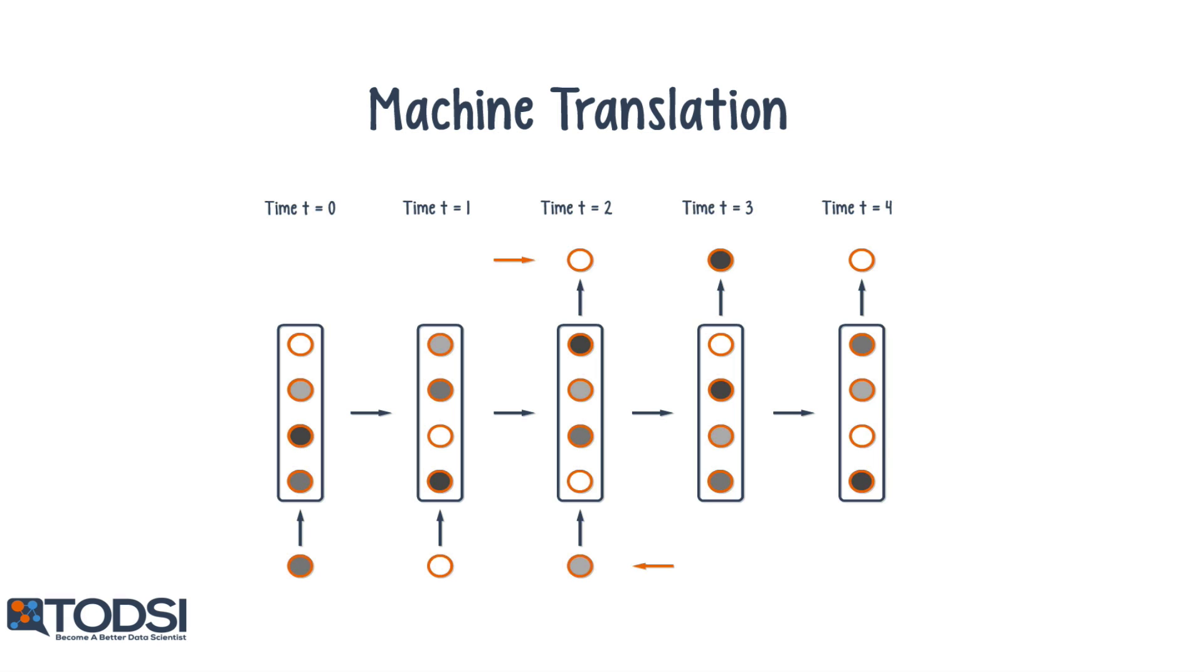So when the net is fed a sequence of words in one language, it knows how to generate the appropriate sequence of words in the other language.